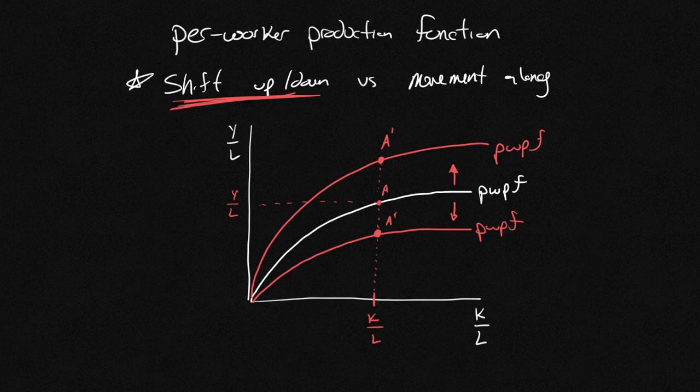And what happens is if there's an increase in technology, we see an upward shift. So even with the same level of capital, we get more output.